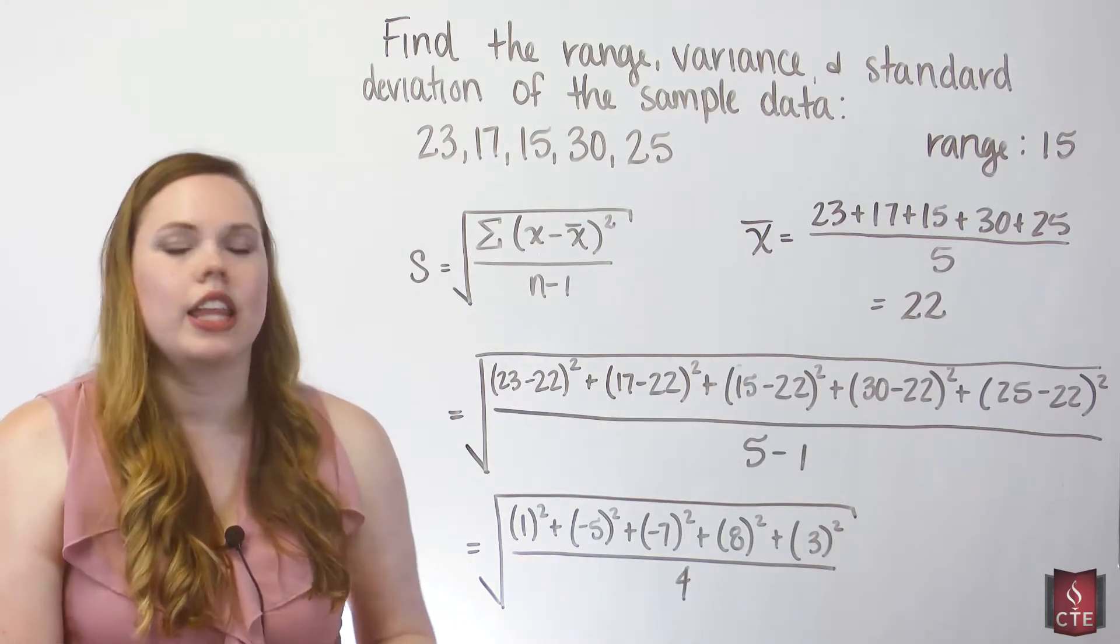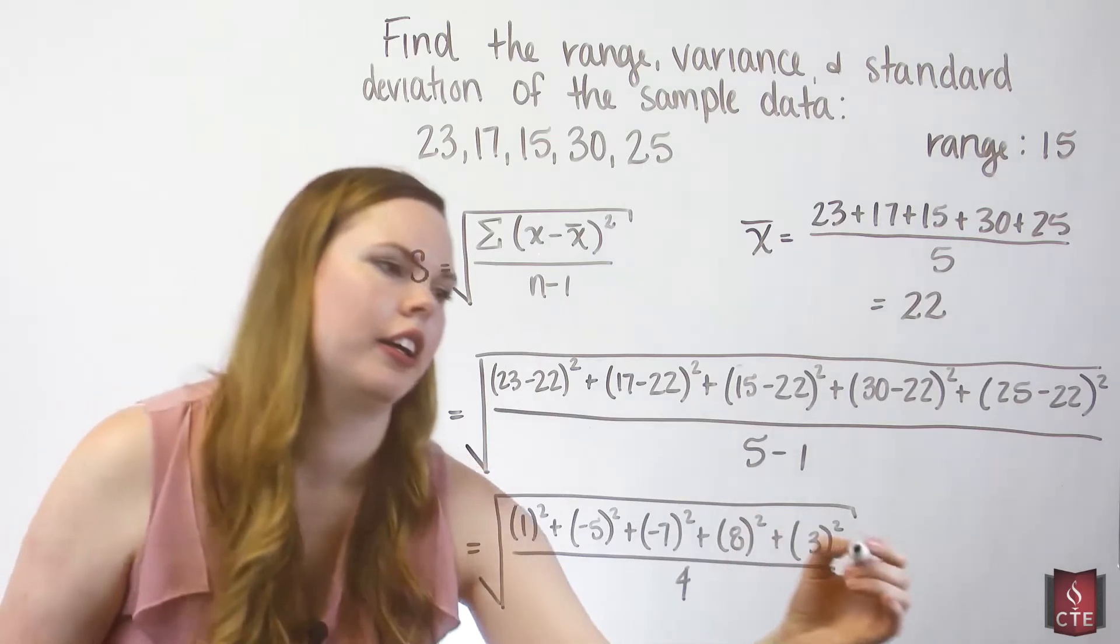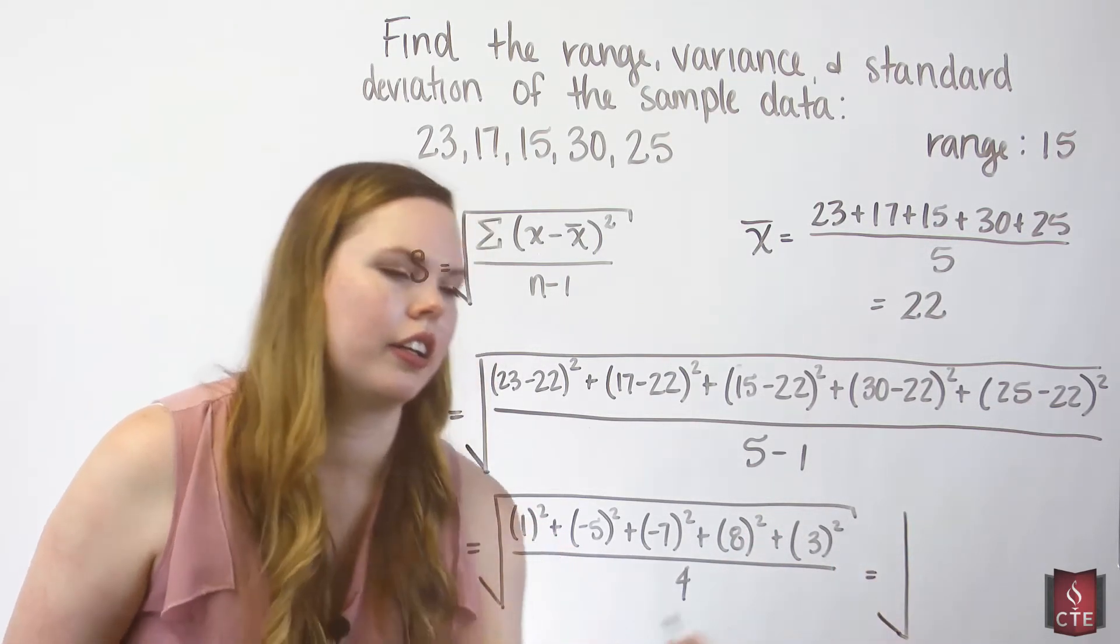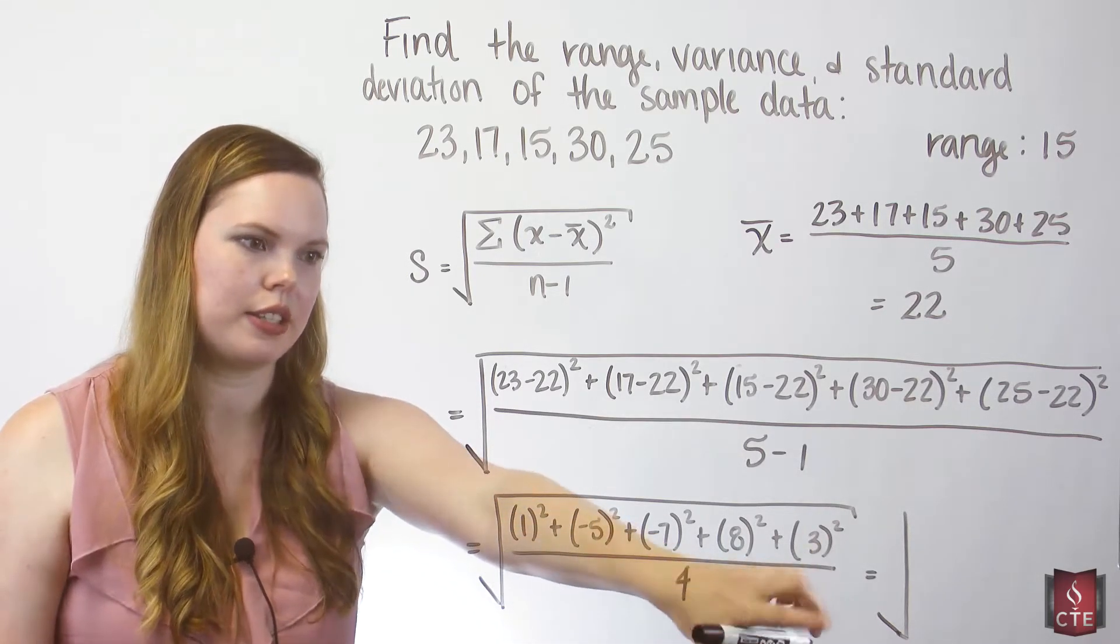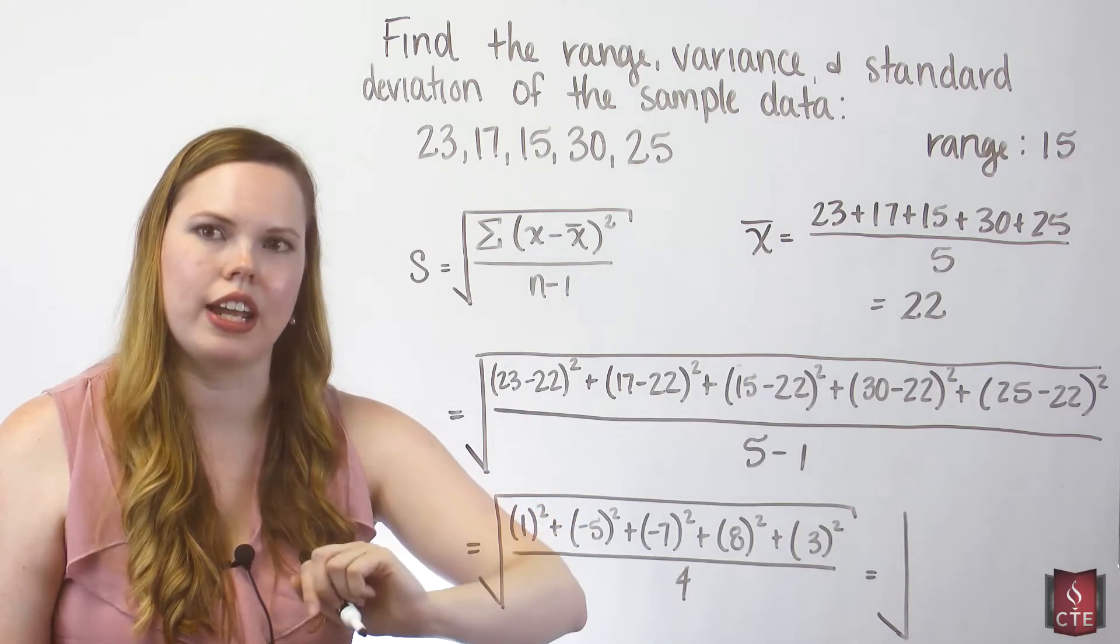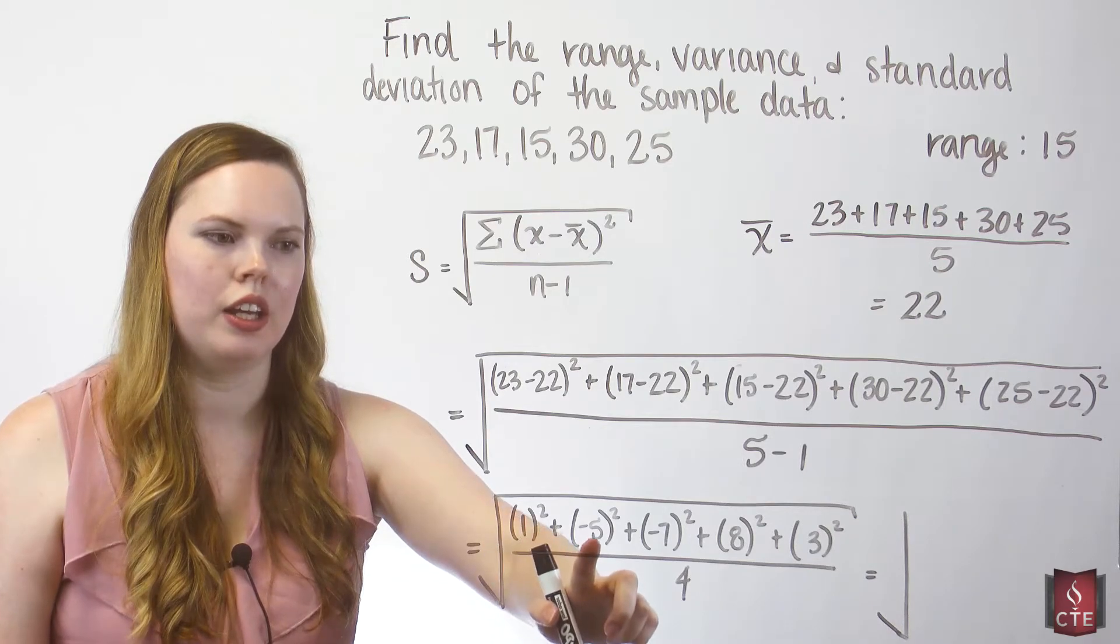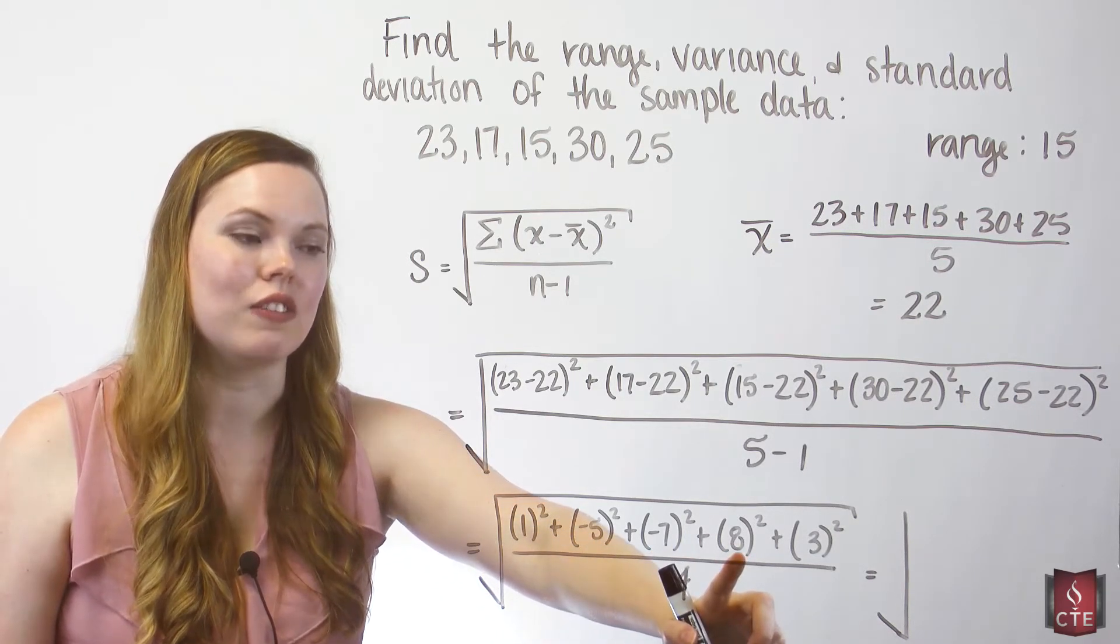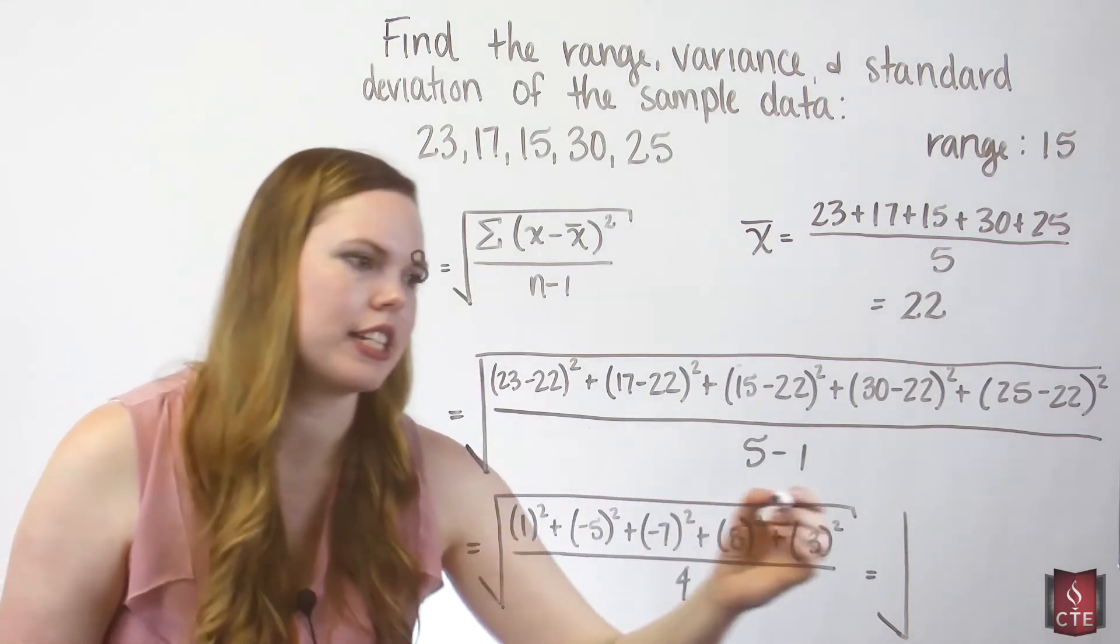And then if you were to square all these data values and add them together, you're going to get 148. So we take all these and we square them. Make a note of the fact that these are negative. When you square them, they are going to be positive. So this is going to be 1 plus 25 plus 49 plus 64 plus 9. Add those together and we get 148.